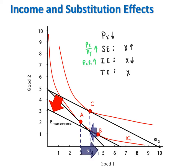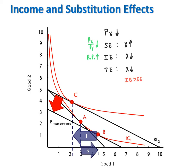As shown in this example, the substitution effect outweighs the income effect, leading to a total effect that pulls consumption of good x up. In this way, the law of demand holds — price of x goes down, and what actually happens is x goes up. Some inferior goods do follow the law of demand, specifically when the substitution effect outweighs the income effect. Other inferior goods break the law of demand when the income effect is stronger than the substitution effect. These goods are called Giffen goods. A Giffen good is an inferior good for which the income effect is stronger than the substitution effect, giving us a total effect that breaks the law of demand.